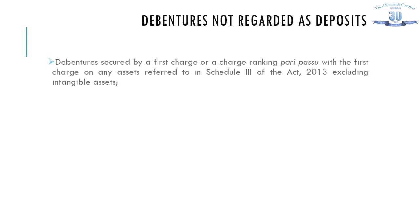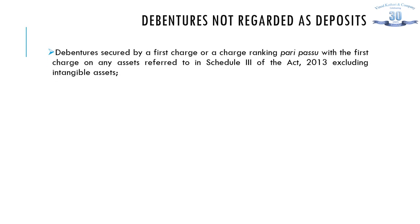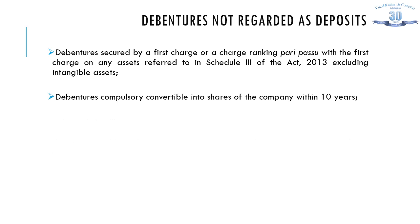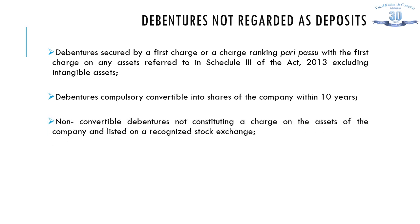Sometimes certain debentures are regarded as deposits. However, debentures not regarded as deposits include: debentures secured by first charge or charge ranking pari-passu with the first charge on any assets referred to in Schedule 3 of the Companies Act 2013, which excludes intangible assets; debentures which are compulsorily convertible into shares of the company within 10 years; and non-convertible debentures not constituting a charge on the assets of the company.